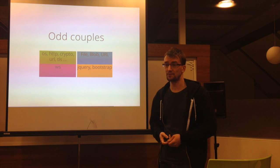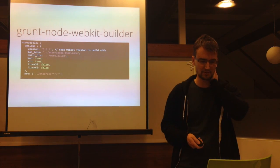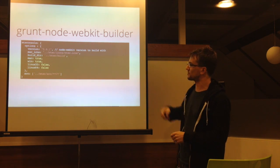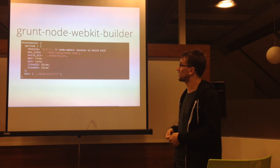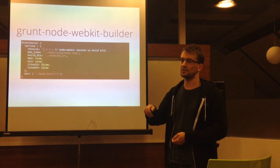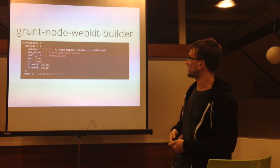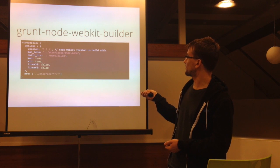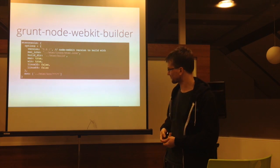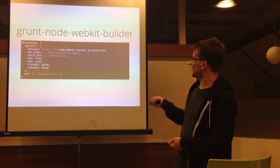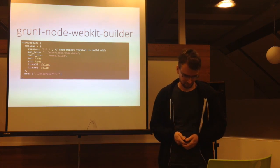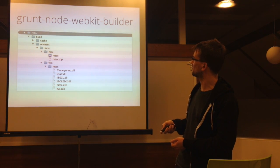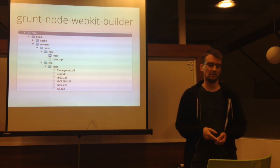This is how the Grunt Node WebKit Builder works. This line is the version of the Node WebKit runtime — if you want to upgrade or a new version comes out, just increment the number here and the Grunt task will download that runtime and build your application with it. The second line is the icon file for Mac. The third is where your build will go. Then we have build targets for Mac and Windows. The last line is where your source files are. This is the output of the build — you can see folders for Mac and Windows, and of course these DLLs are for WebGL and hardware acceleration.